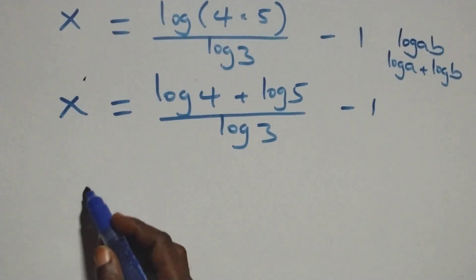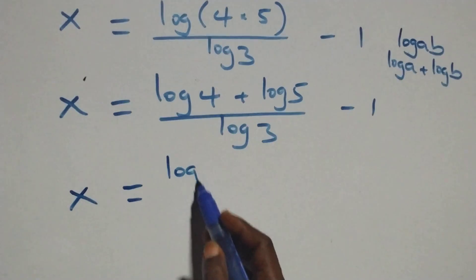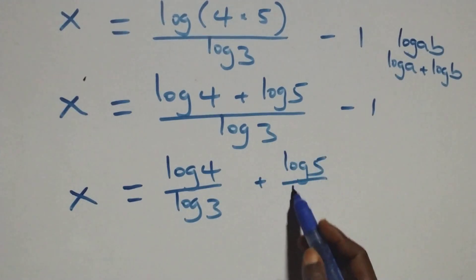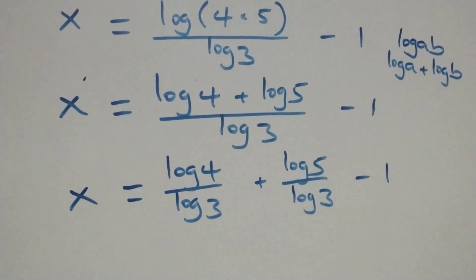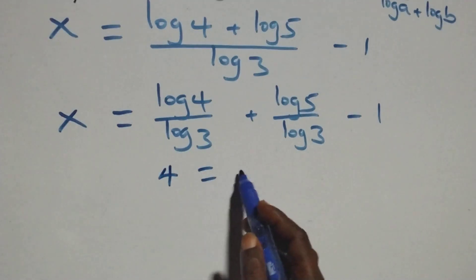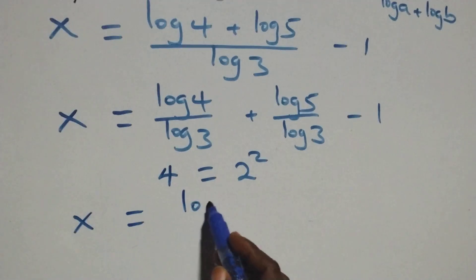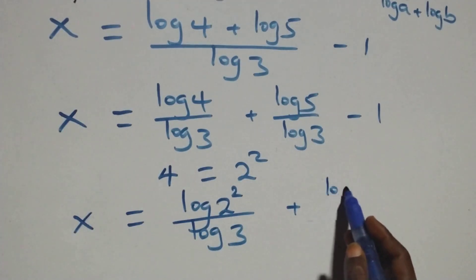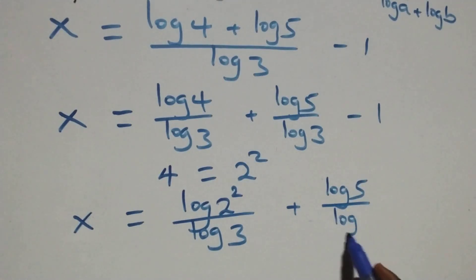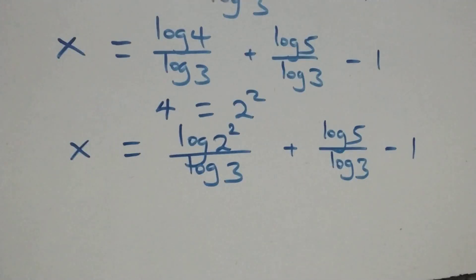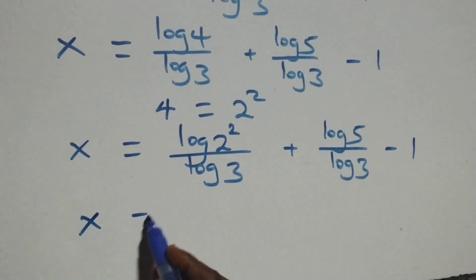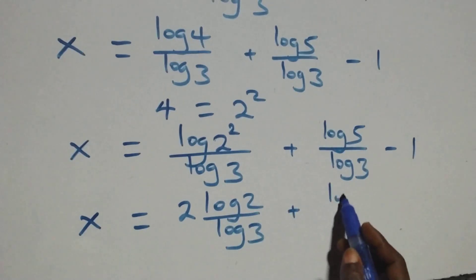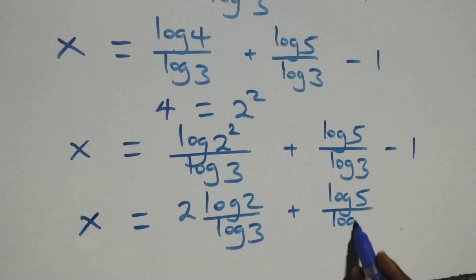We separate this into two fractions: x equals log 4 over log 3, plus log 5 over log 3, minus 1. Now, 4 can be written as 2 squared. Applying the power rule of logs, the 2 comes down: x equals 2 log 2 over log 3, plus log 5 over log 3, minus 1.